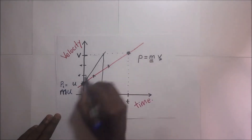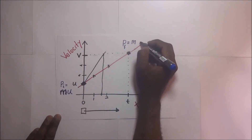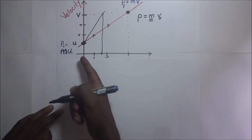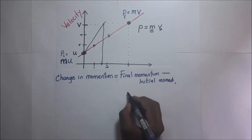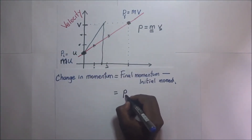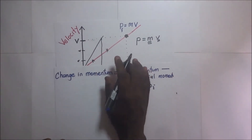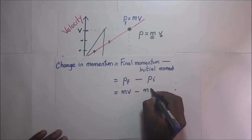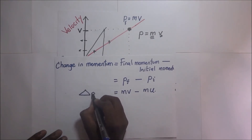The change in momentum is final momentum minus initial momentum: Δp = p_f − p_i = mv − mu. Now, Newton's law talks about the rate of change of momentum, so we include the time element. The rate of change of momentum is given by (mv − mu) divided by the change in time Δt. This expression — the rate of change of momentum — is what Newton says is directly proportional to the force applied.